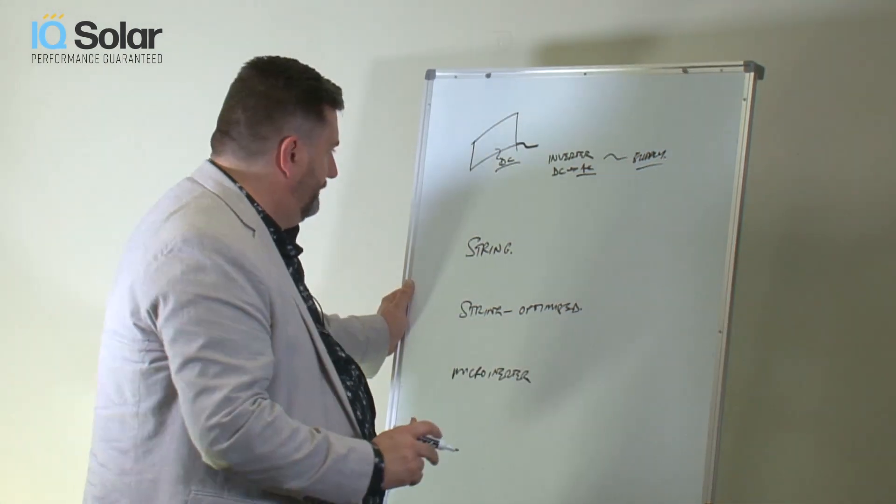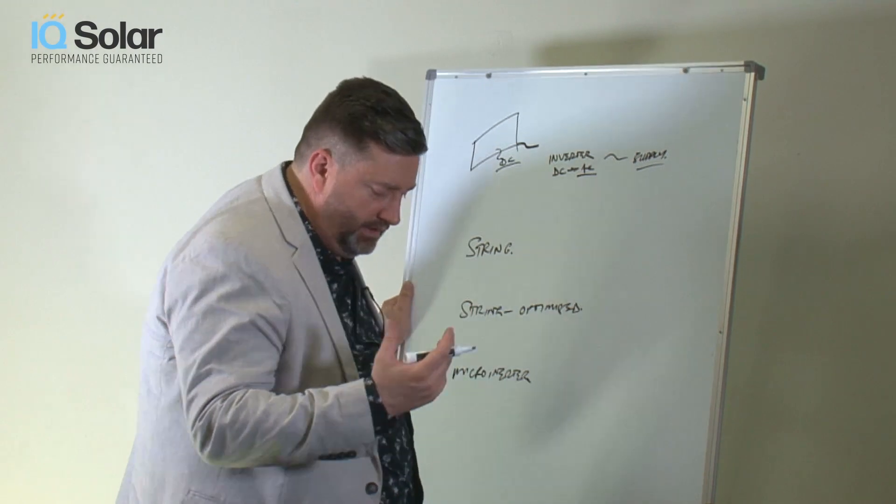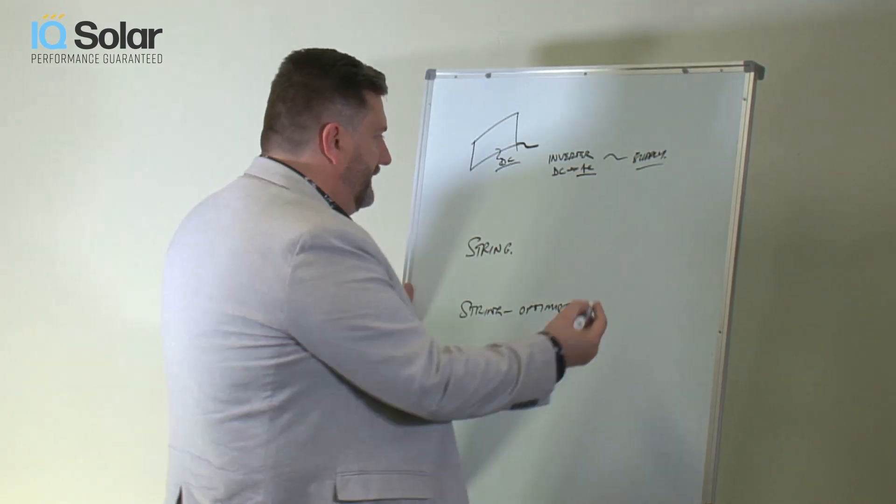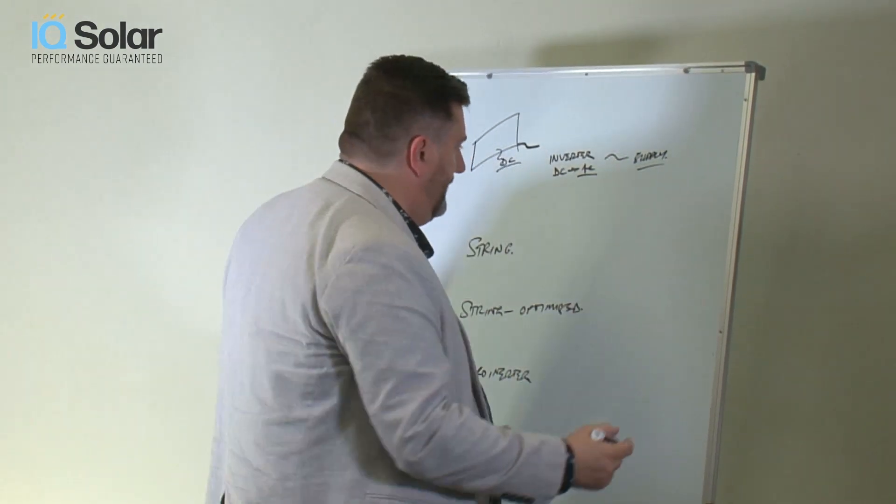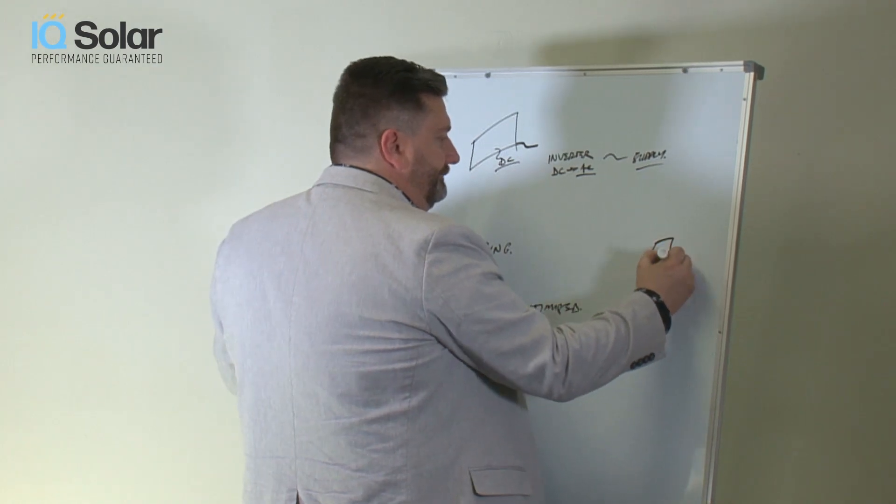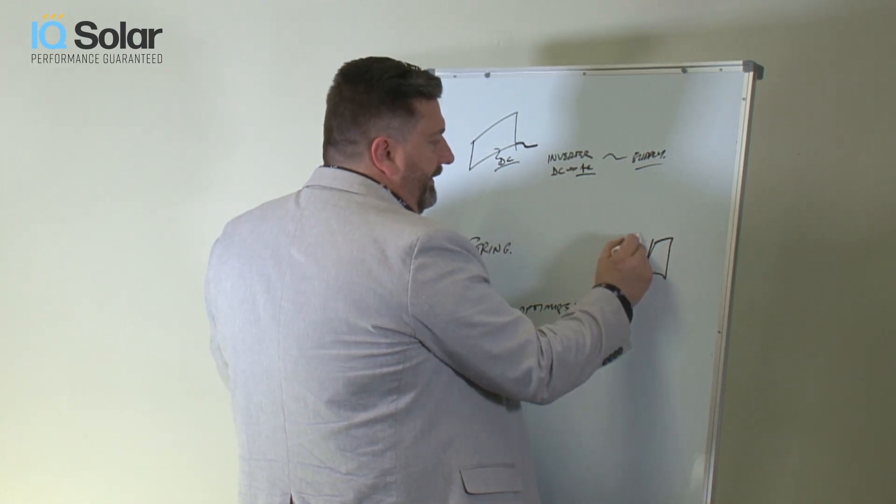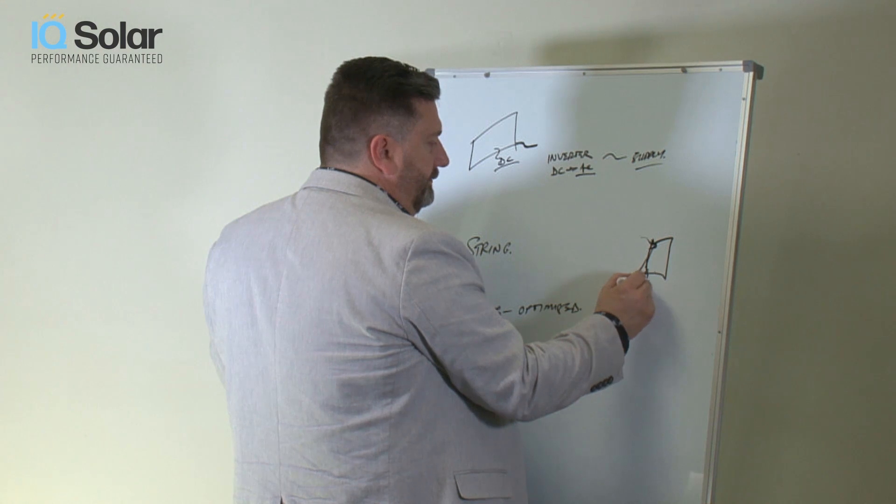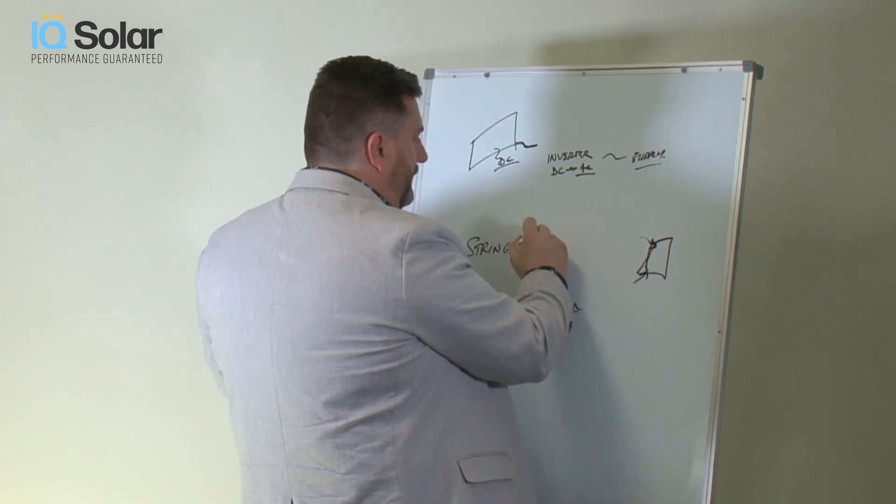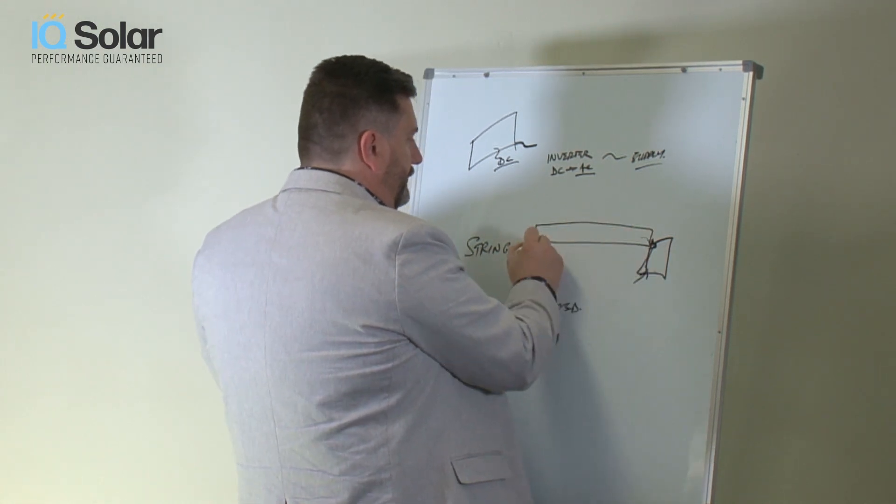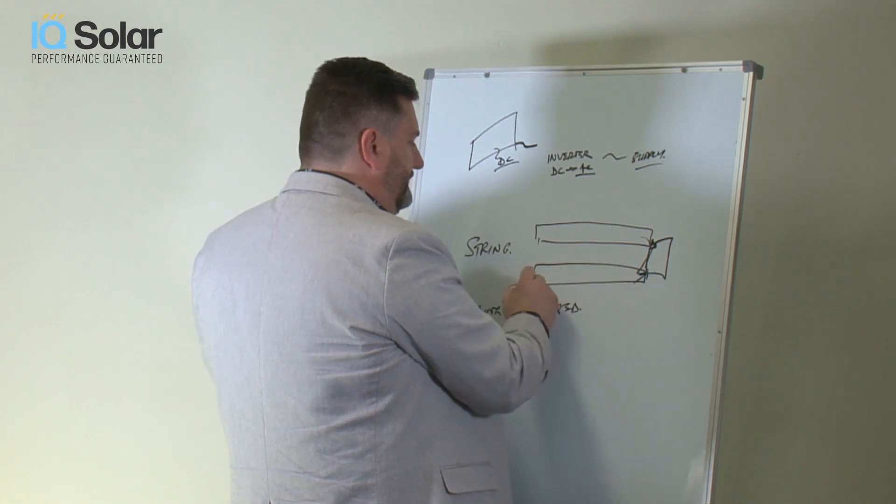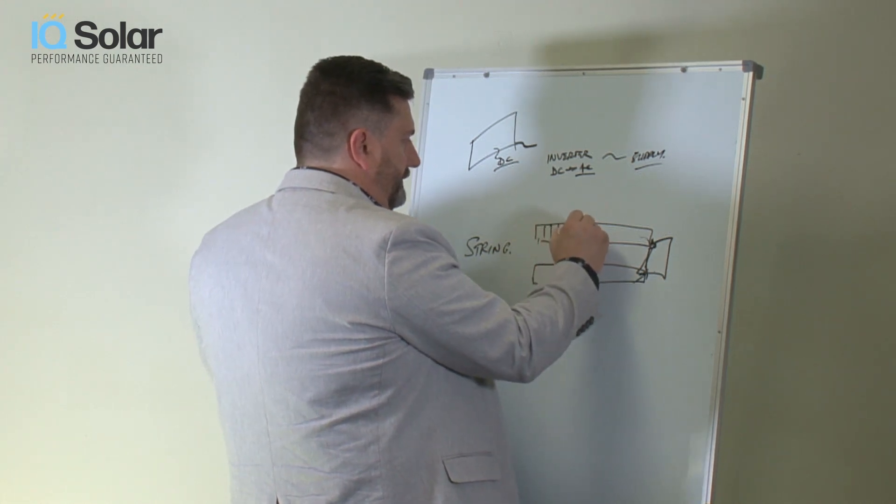So with a string inverter, let's say we were looking at a reasonable sized system, 10 kilowatts or thereabouts. You might have an inverter. There are two inputs into this, which are called MPPTs. And with each, you can have two independent strings.